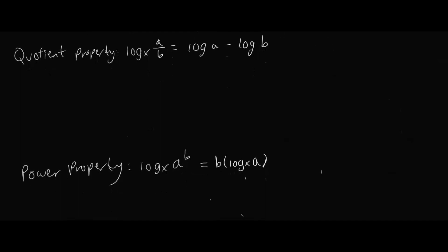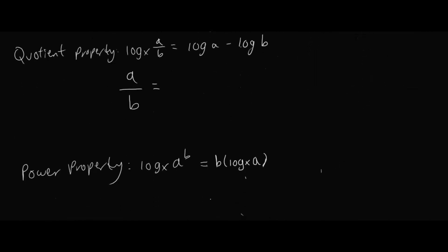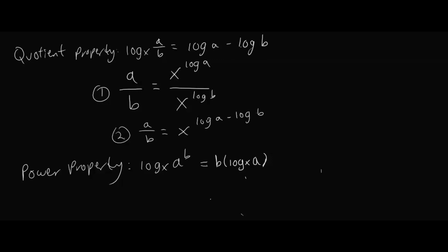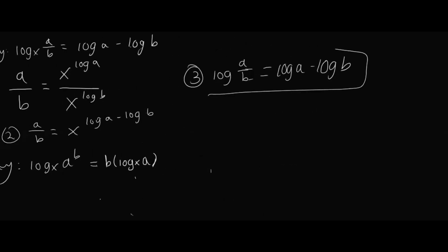Let's move on to the quotient rule. We already know what A over B is because of the substitutions we proved above. So A is x to the power of log A, and B is x to the log B. Using exponent rules, this simplifies to x to the power of log A minus log B. Taking the log of both sides like we did with the product rule, log of A over B is equivalent to log A minus log B. That is our quotient rule.